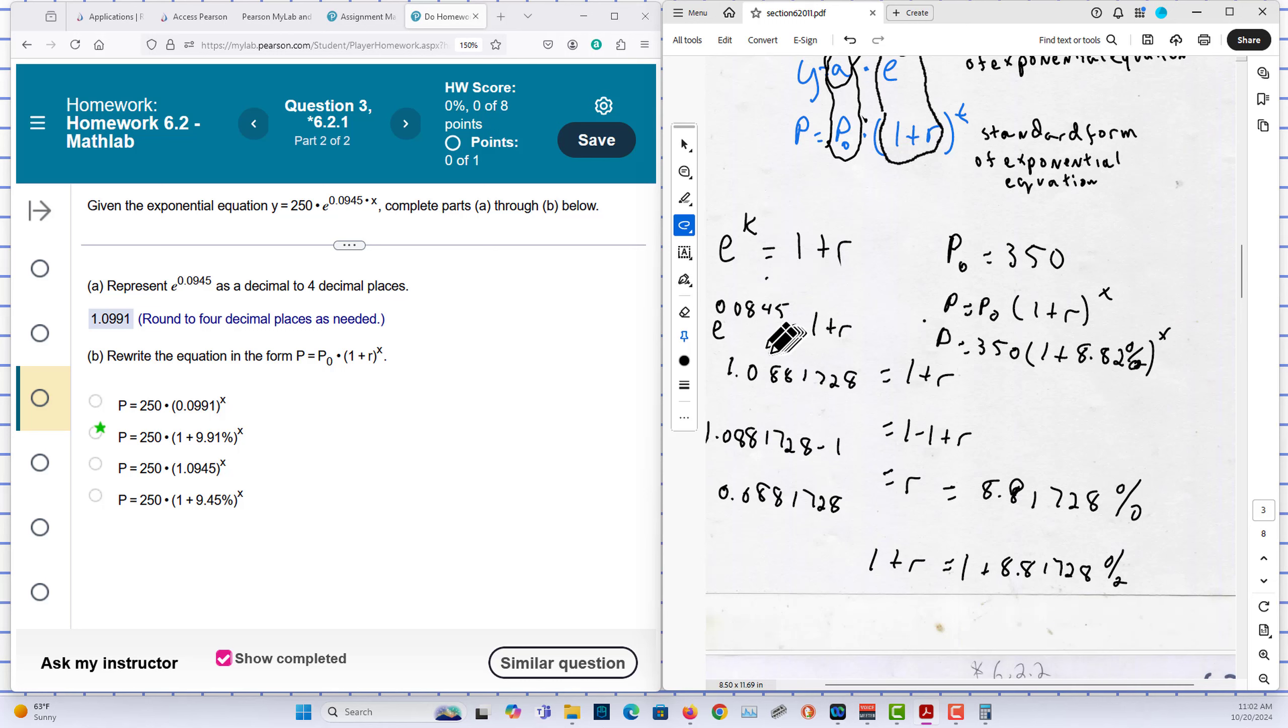So e to the k is equal to this right here. And the equation you're looking for is right here. When that finishes, 6.21.